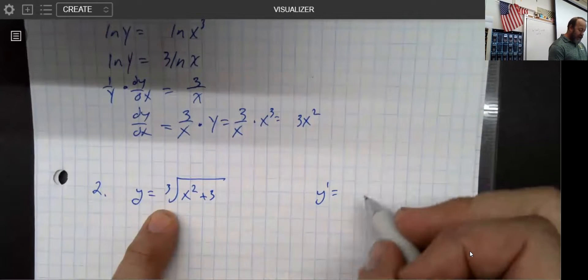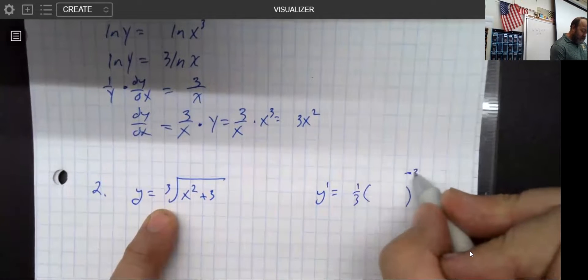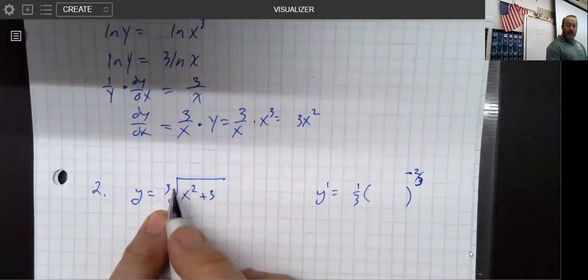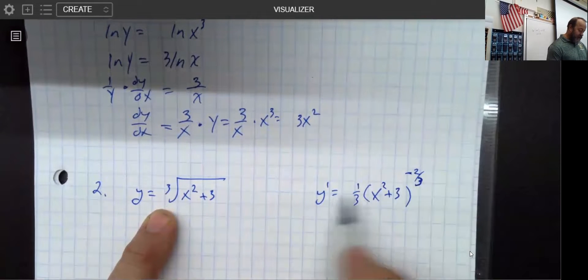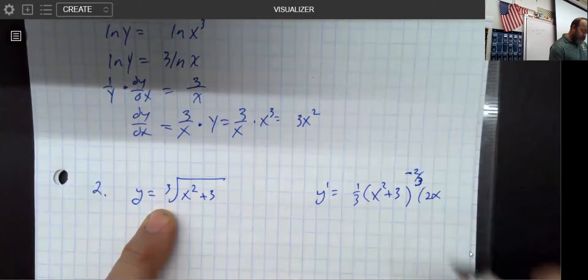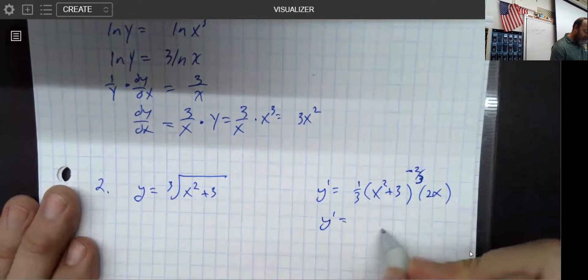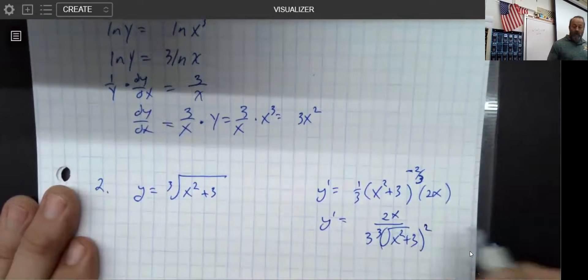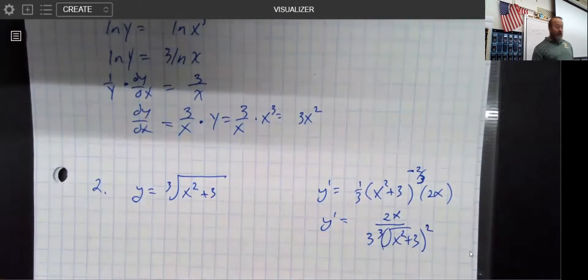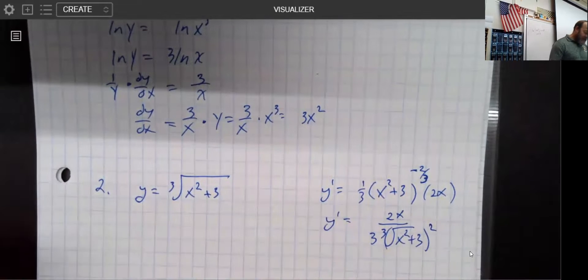So chain rule would say that if I have this whole thing to the one-third power, I should remove 1 from the exponent, put the original exponent in front, and then multiply by what's inside. So if we do this other problem correctly, we should get something that is either directly what I'm going to show you right here, or at least equivalent to it. I still think chain rule is better for a problem at this level of difficulty, but it works out okay.